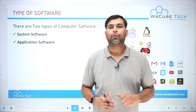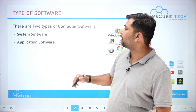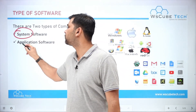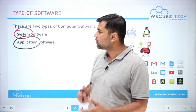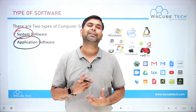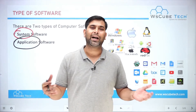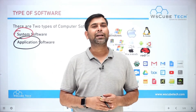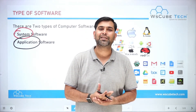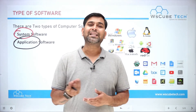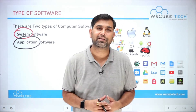If we talk about software, there are two types of software: system software and application software. System software is the type of software that you use to operate, handle, or access computer hardware — such as the hard disk, processor, keyboard, and monitor.